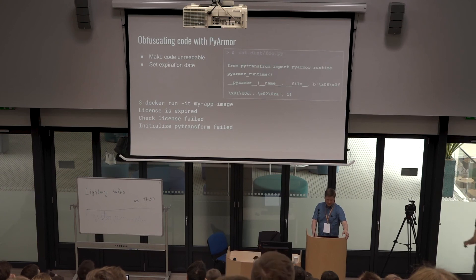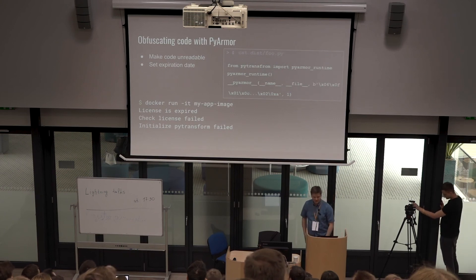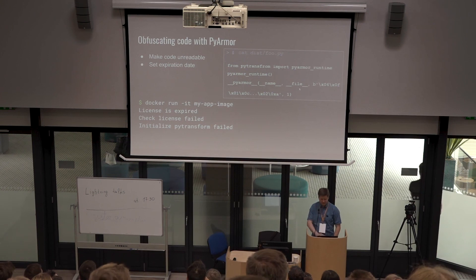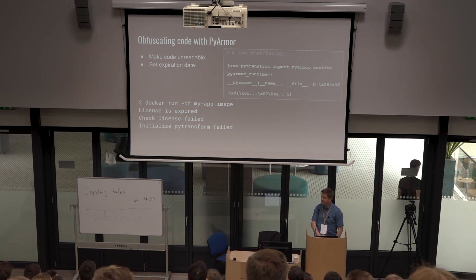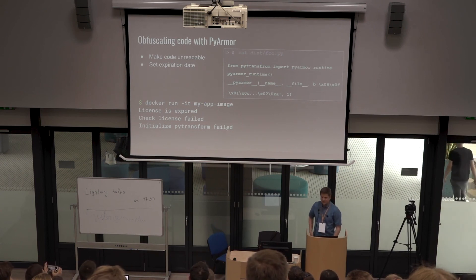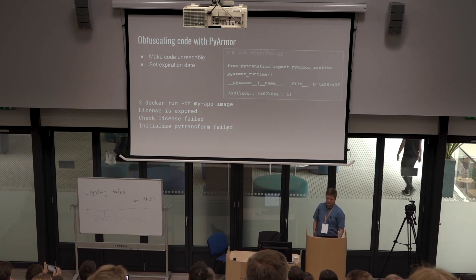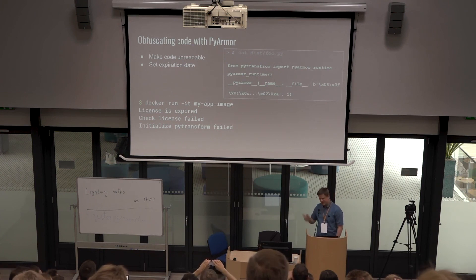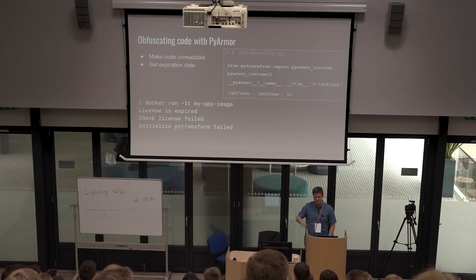We obfuscate code with PyArmor. This makes the code look binary, and you can actually set an expiration date. That's a sample of a file transformed by PyArmor. And if you have set an expiration date, once you run the image, you get this output: 'License is expired.' So we distribute these Docker builds for customers who want to try out our software, set the expiration date, and set environment variables so you know, for example, that you sent that Docker image to John.